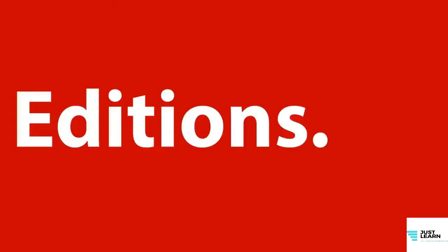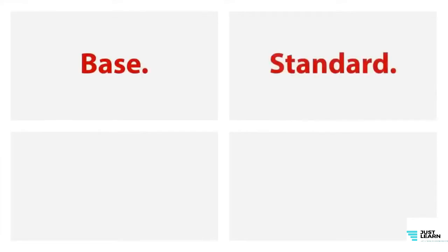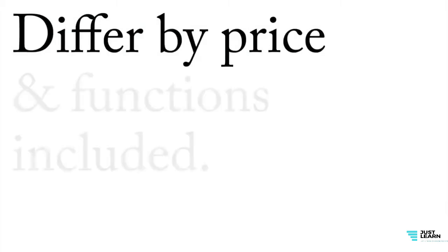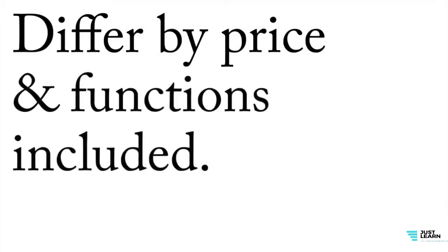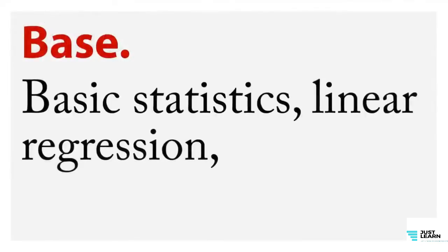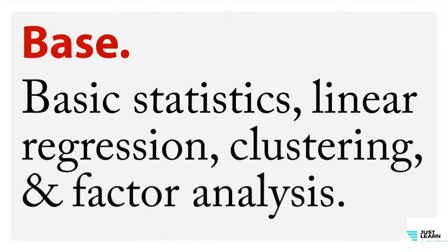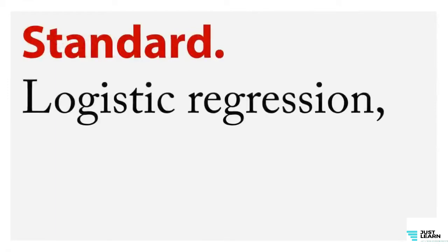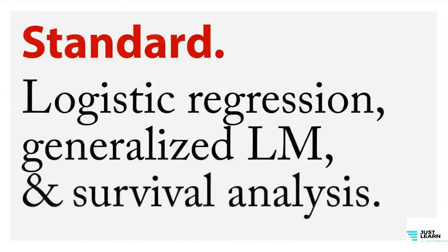Now we need to talk about editions of SPSS. There are a few major choices: the base edition, the standard edition, the professional edition, and the premium edition. They differ by price and by the functions included. In base you get basic statistics, linear regression, clustering, and factor analysis. Standard adds logistic regression, generalized linear models, survival analysis, and drag-and-drop interactive tables.